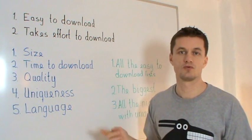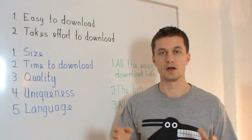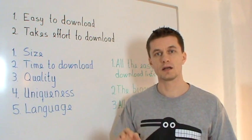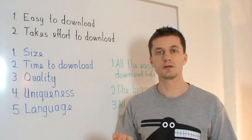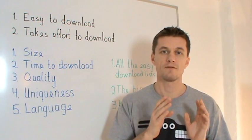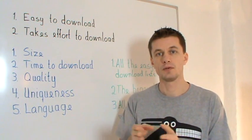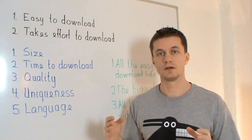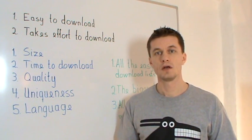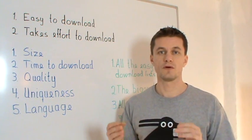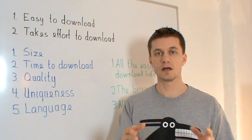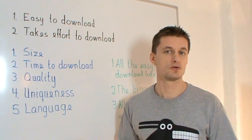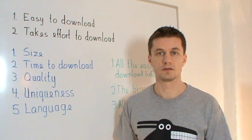Then there's language. Language is straightforward if it's in English because then you have all the biggest lists there. But if you're making a list in a smaller language, you might only have a few lists and they might be small. To cover a lot of ground, it might be worth the effort to find a big English keyword list, download it, put it in Google Translate, and use that as a keyword list as well.